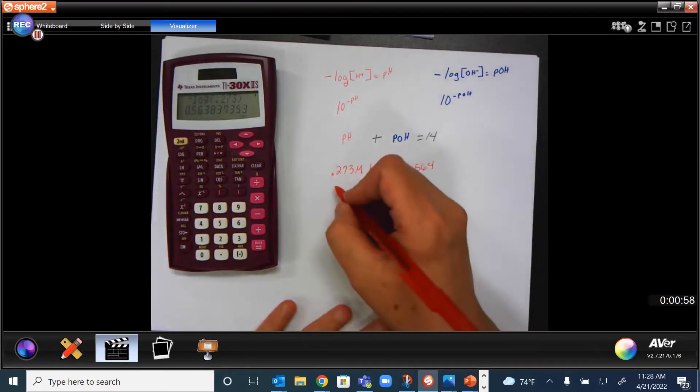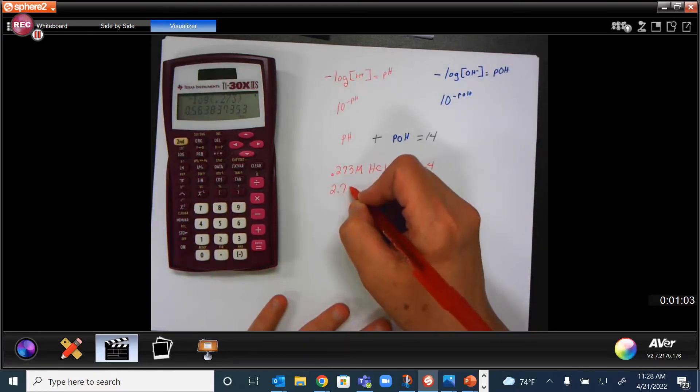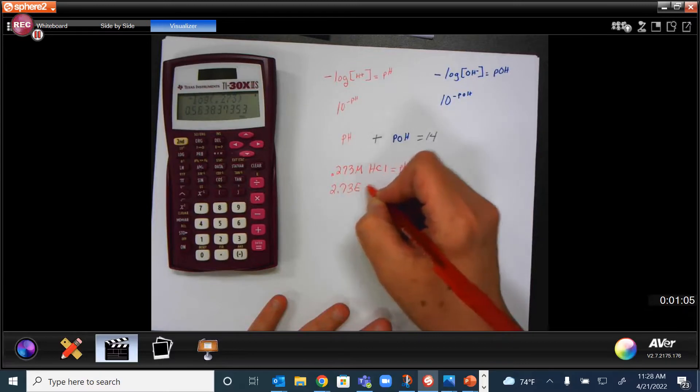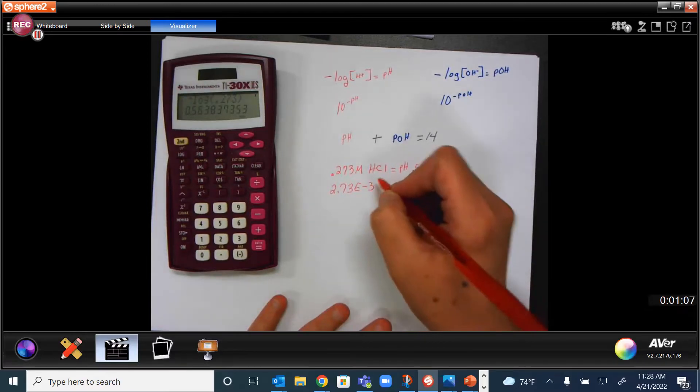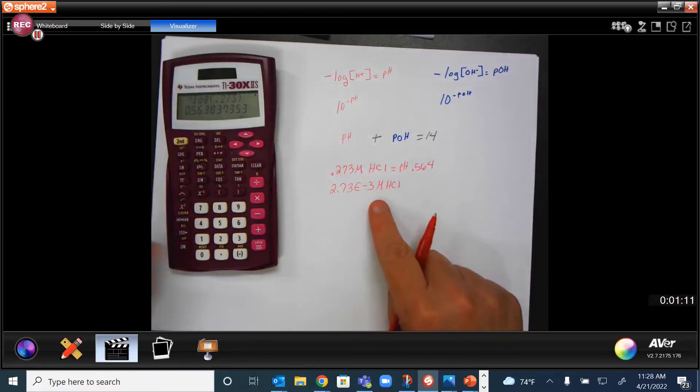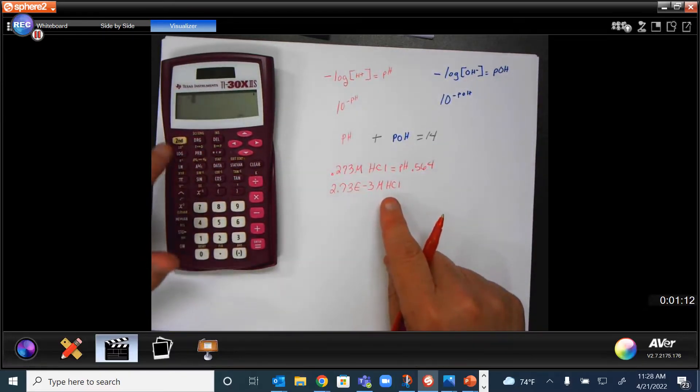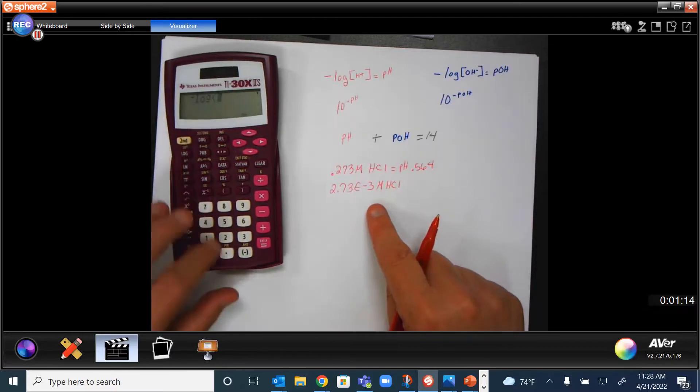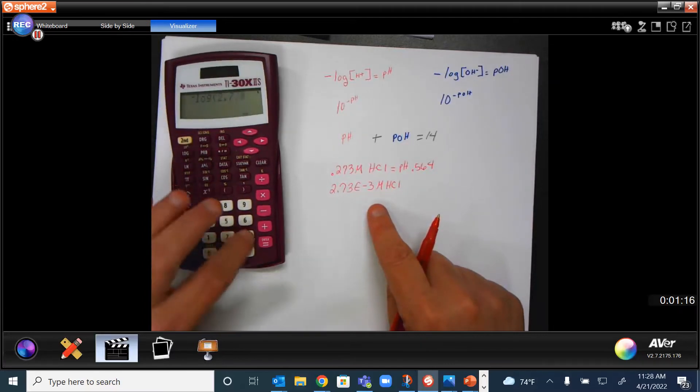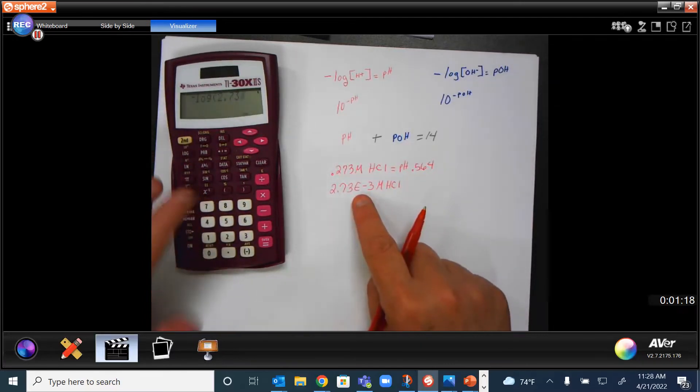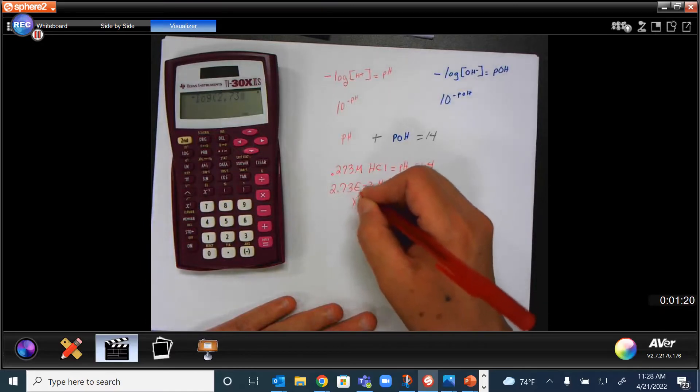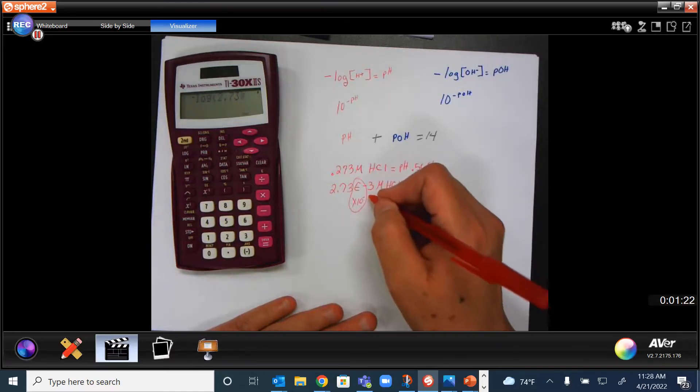Now, what if I had a concentration of 2.73E to the negative 3, and that's my molarity of HCl? So how would I do this? Well, I still would do negative log 2.73, but then I have this E, or times 10, remember these two things, to the negative 3.